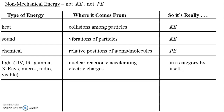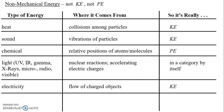Another type of non-mechanical energy students usually identify is electricity, which we just mentioned when discussing light. Electricity is generally the flow of charged objects — electrically charged objects. It can be electrons, but it could be all sorts of other things. We'll do a lot of work on electricity later in the year. These charged objects are flowing, so of course it sounds like kinetic energy — it's just at the microscopic level. You can't see these particles moving, so it's a non-mechanical form of energy.